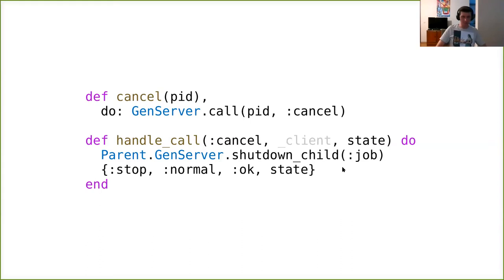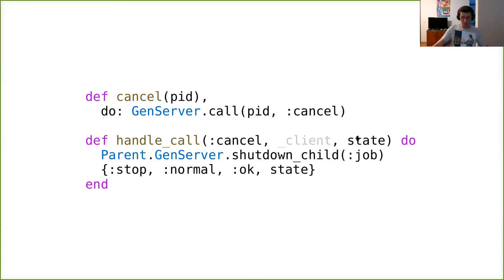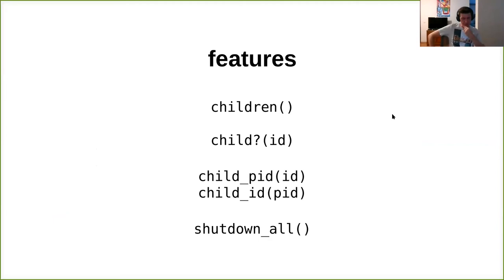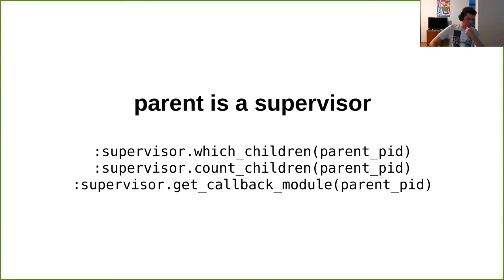A couple of other features of parent — these functions are meant to be invoked from the server process only. You can call children to get the list of children, child? to check if an ID is a living child, mappings between logical IDs and PIDs, and you can manually request a synchronous shutdown of all children. This does the same thing as terminate but lets you stop children without terminating yourself.